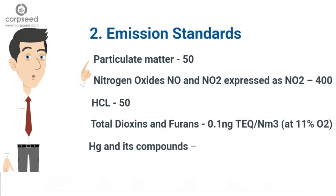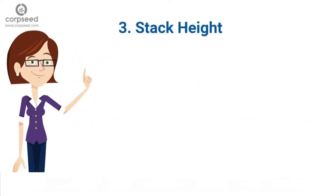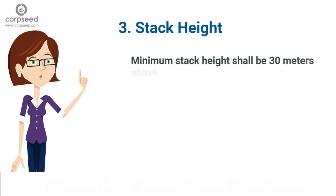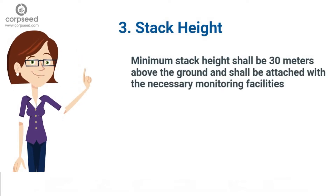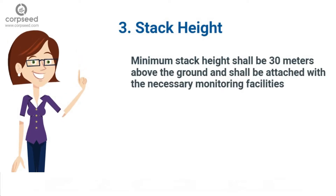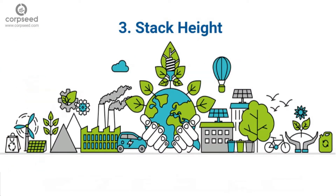Mercury (HG) and its compounds: 0.05. Minimum stack height shall be 30 meters above the ground and shall be attached with the necessary monitoring facilities as per the Environment Protection Act 1986 and in accordance with the Central Pollution Control Board Guidelines of Emission Regulation Part 3.